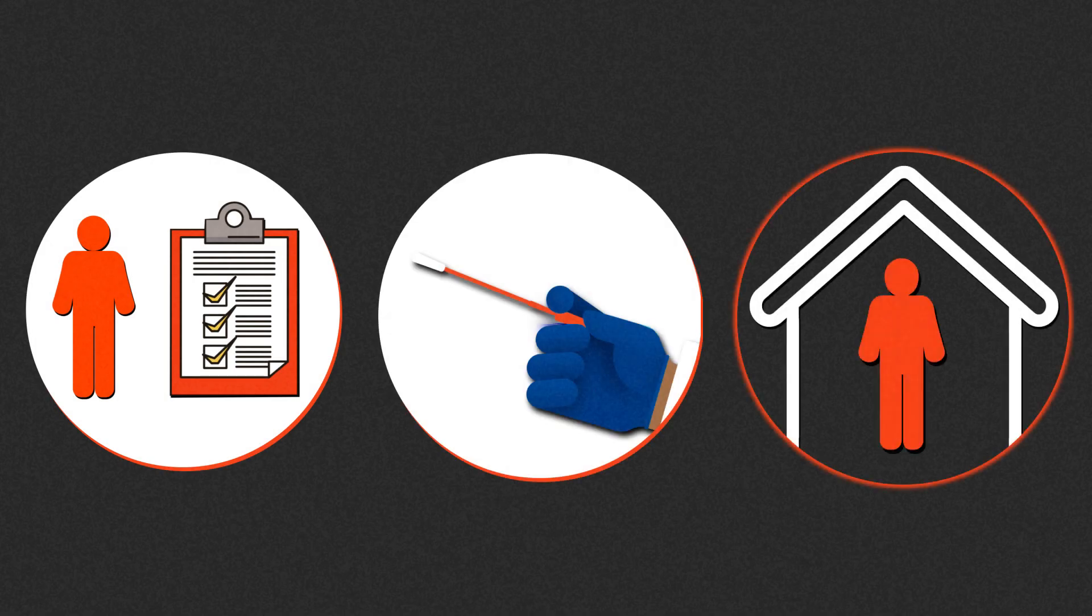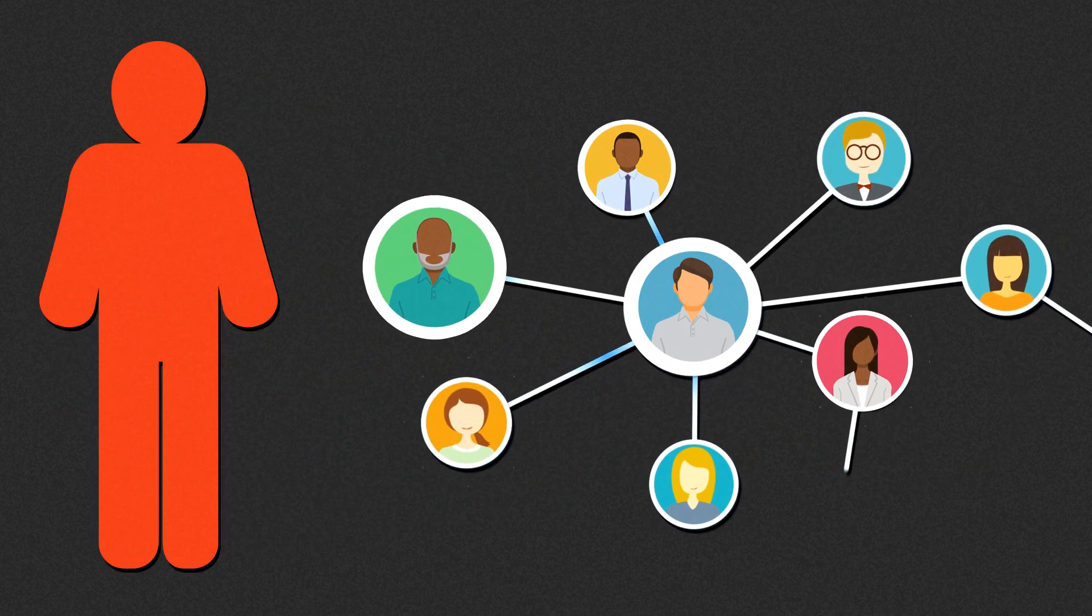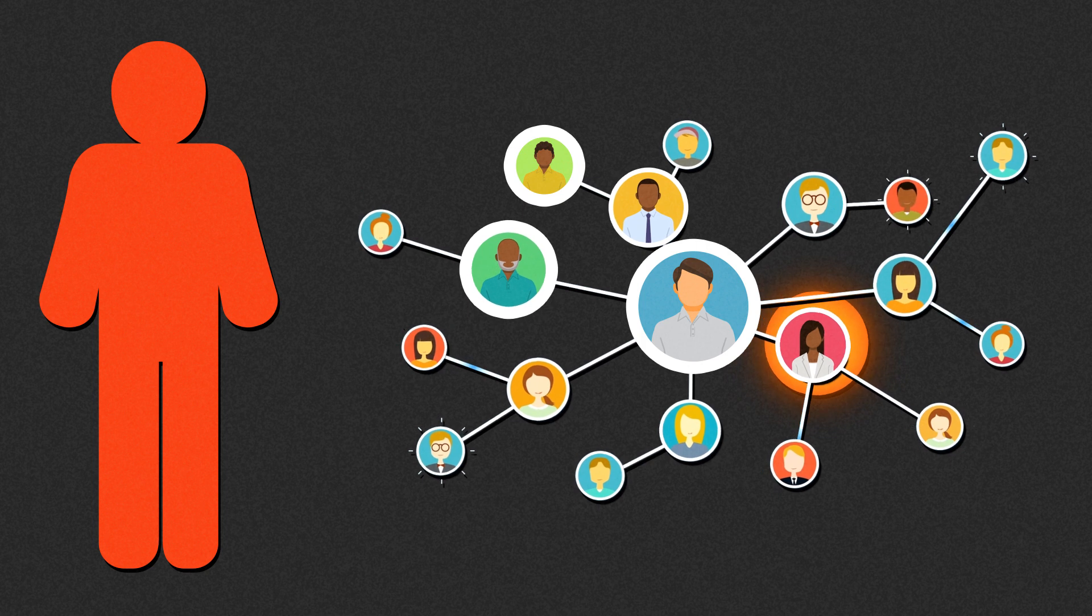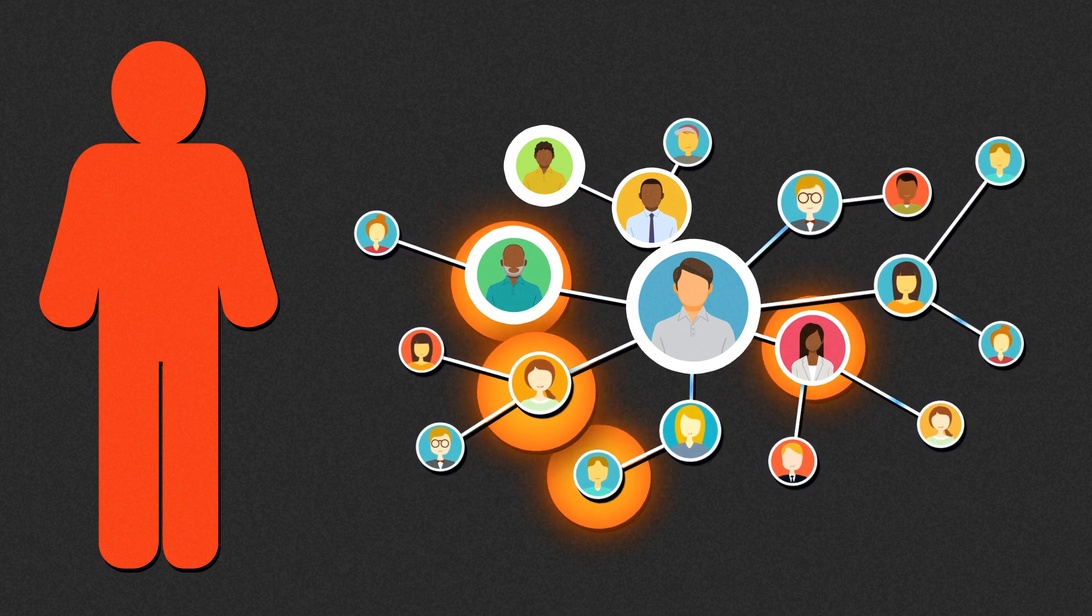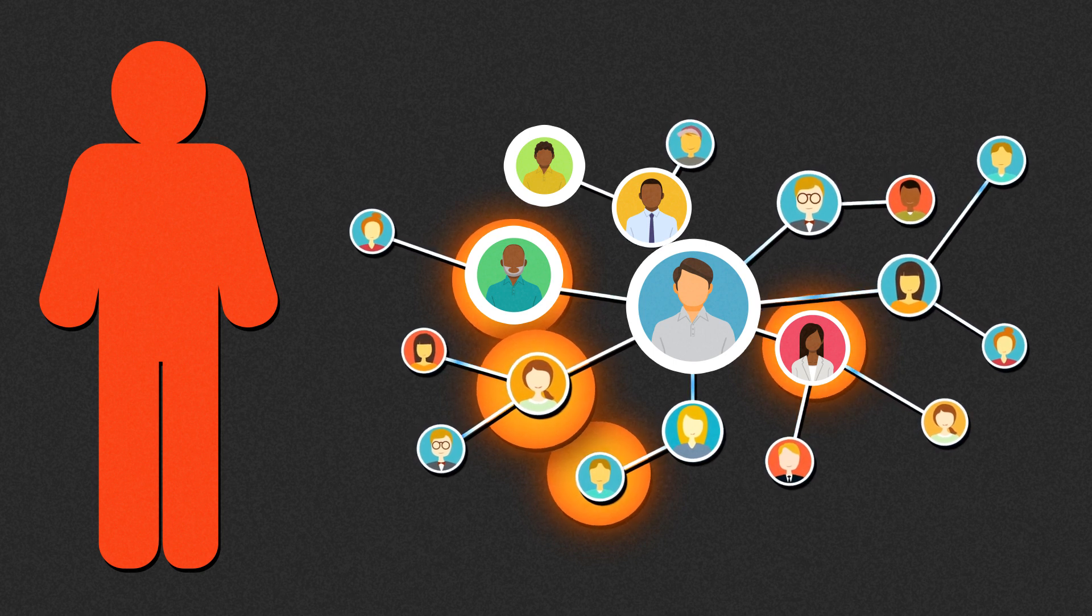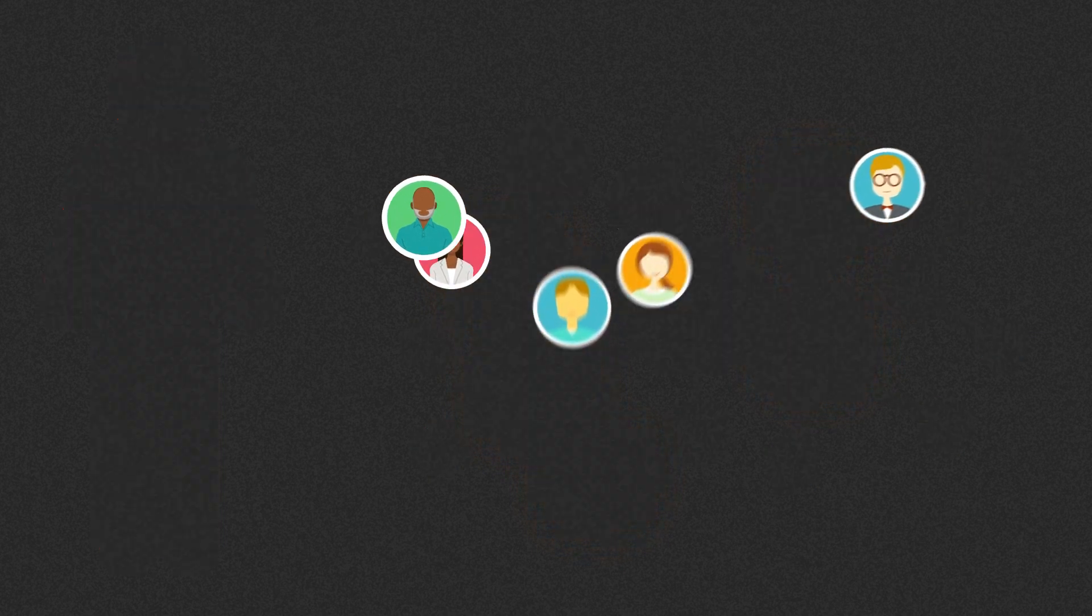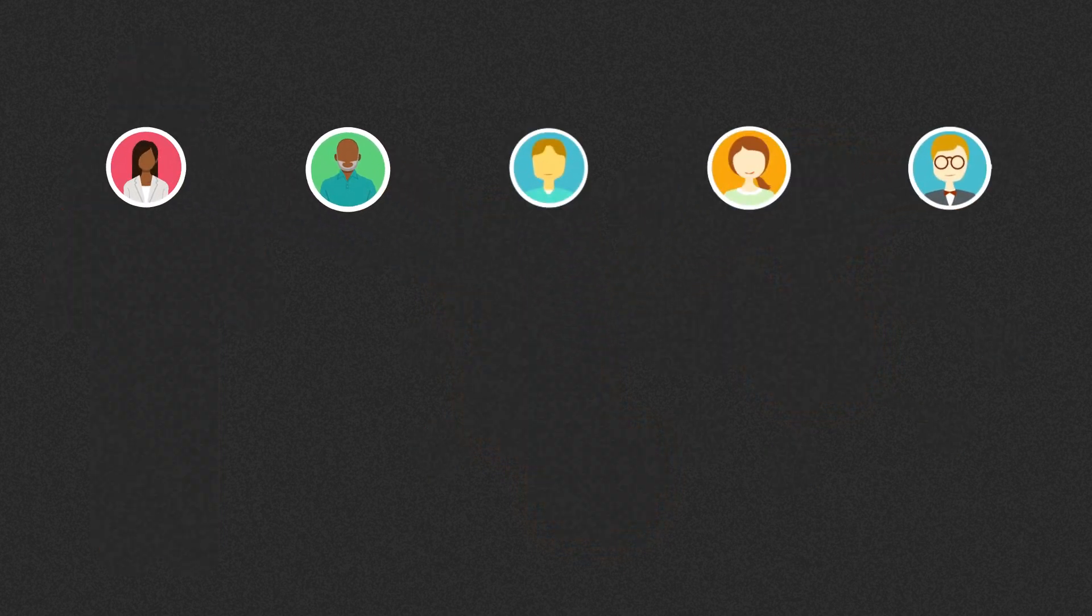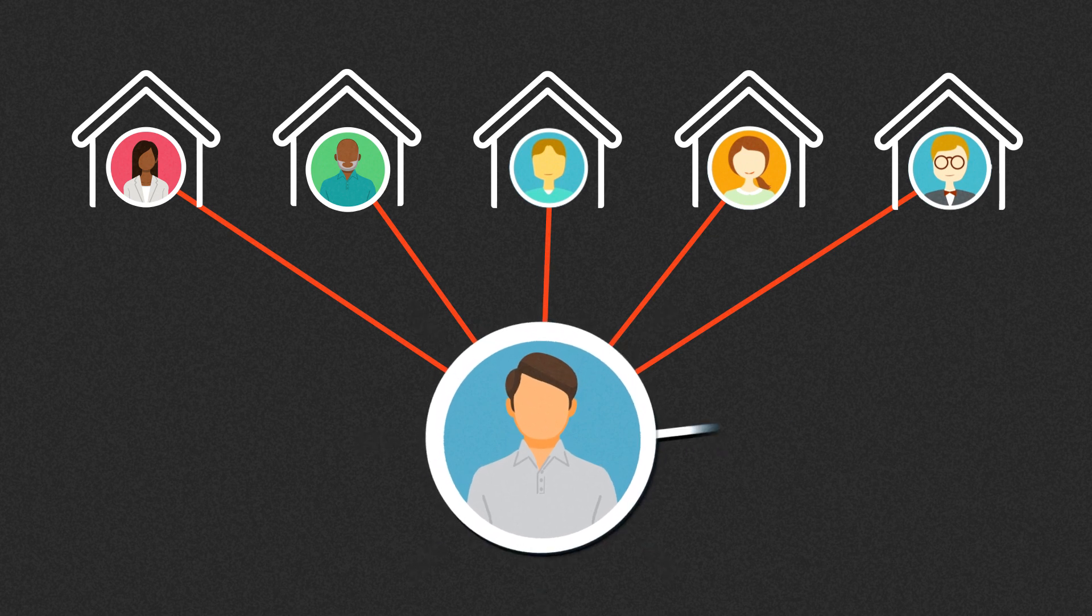But it isn't enough to simply screen, test and isolate. Once someone tests positive, epidemiologists rapidly trace their contacts. Spouses and friends may need to be tested. The coworker who sits in the cubicle next to you. The hairstylist that cuts your hair. The people who attended a community or faith based event with you. And if they too are infected, well then they too must be isolated and their own contacts traced, beginning the process anew.